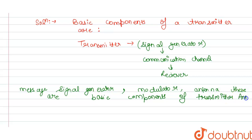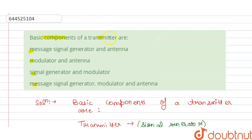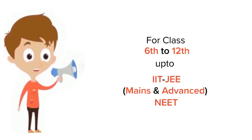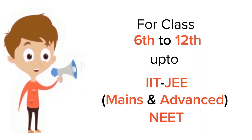So this is the answer for this question. Now we check which option is correct here. So message signal generator and antenna, modulator and antenna, and the signal generator and modulator, but we required signal generator, modulator, and antenna. So our option D is correct here.